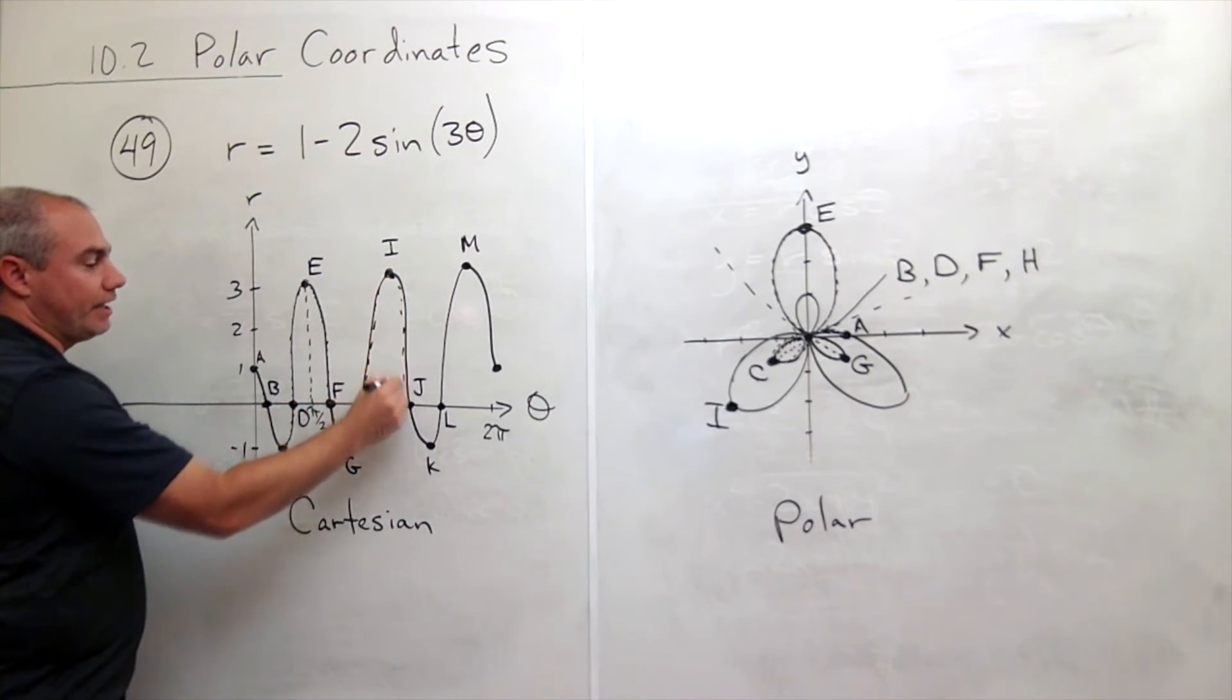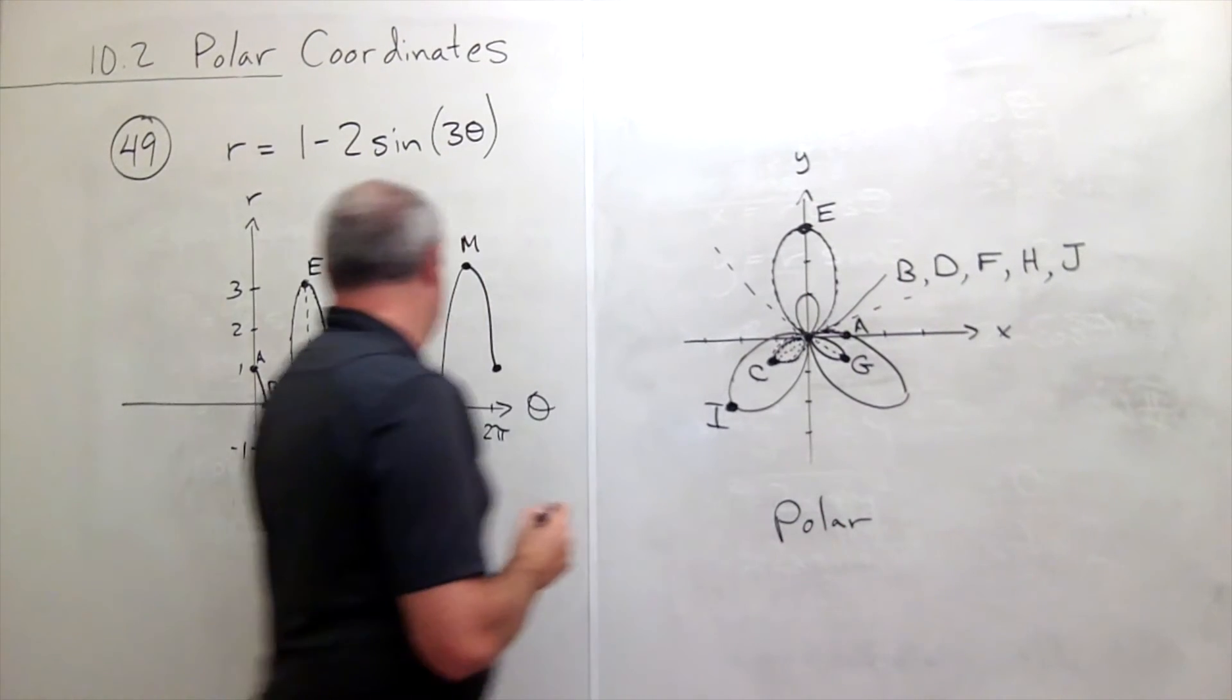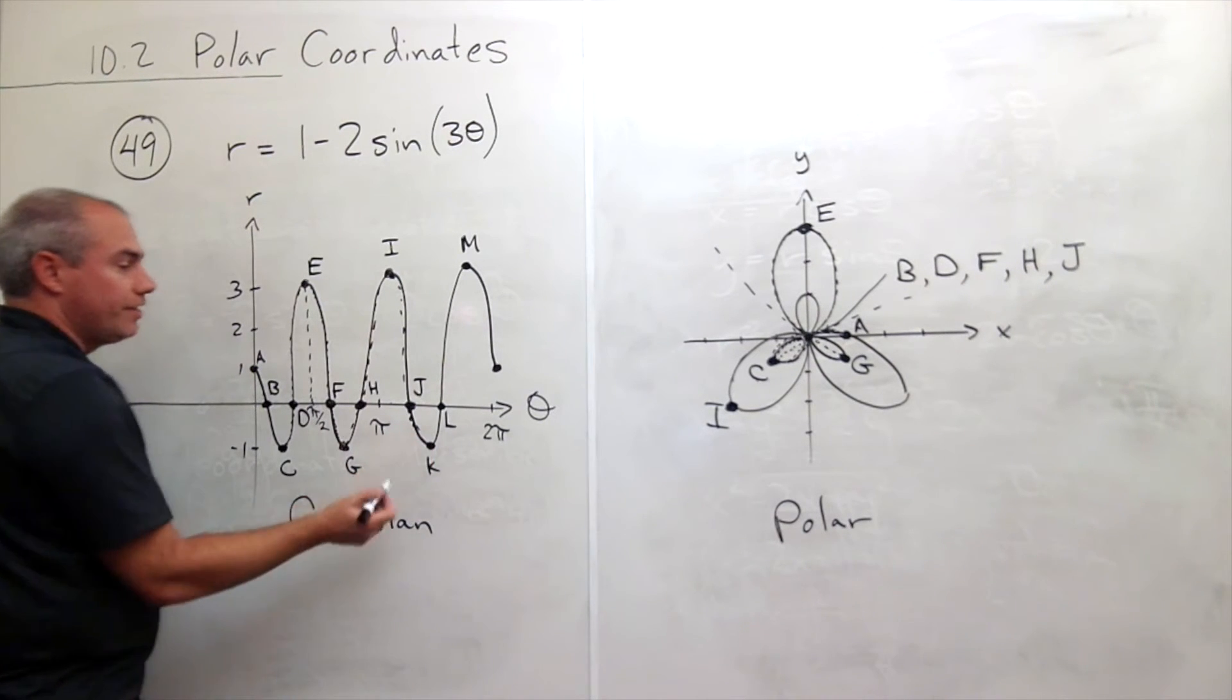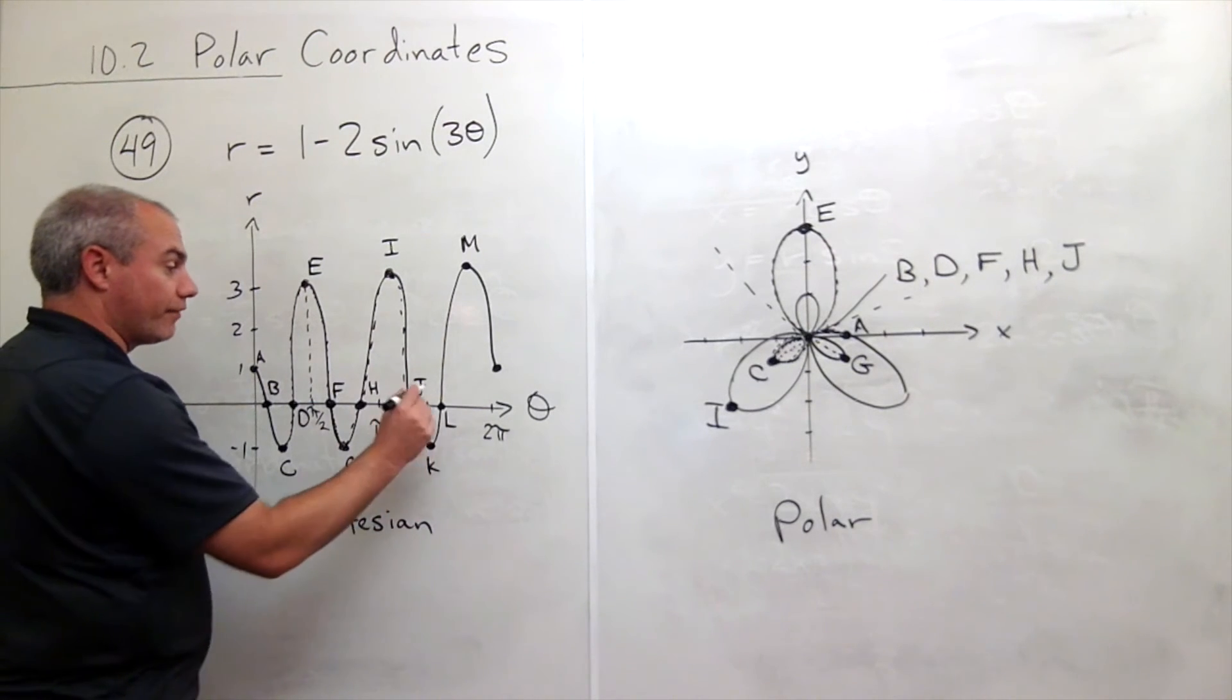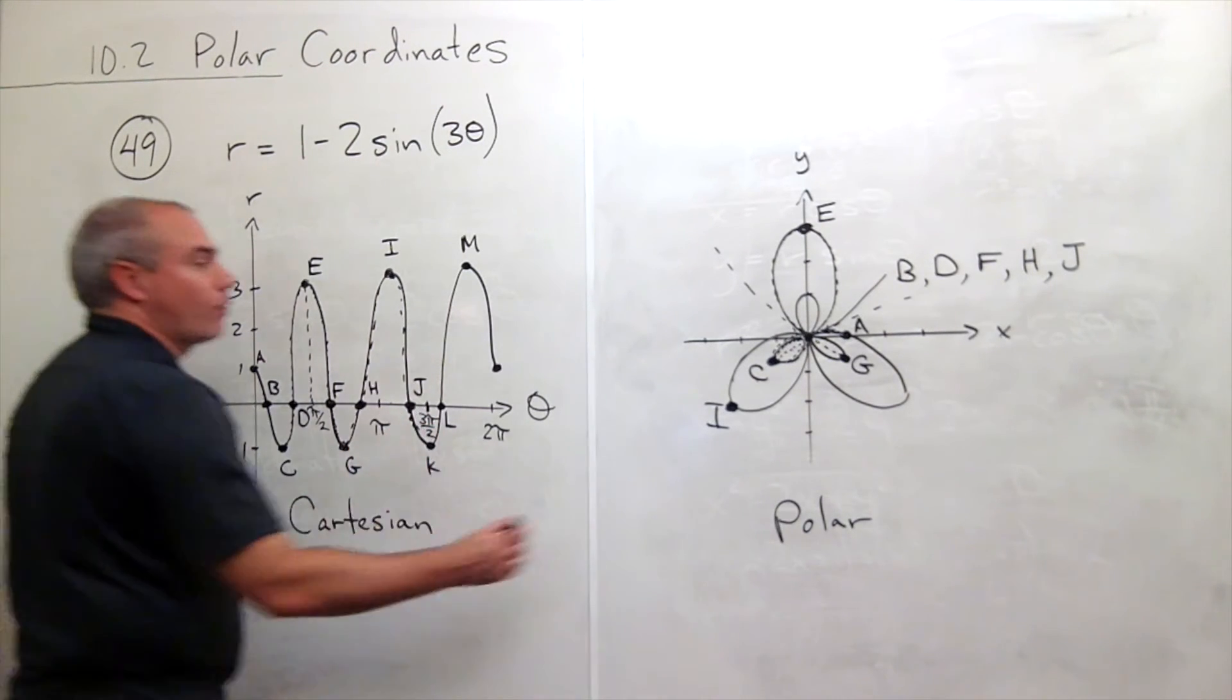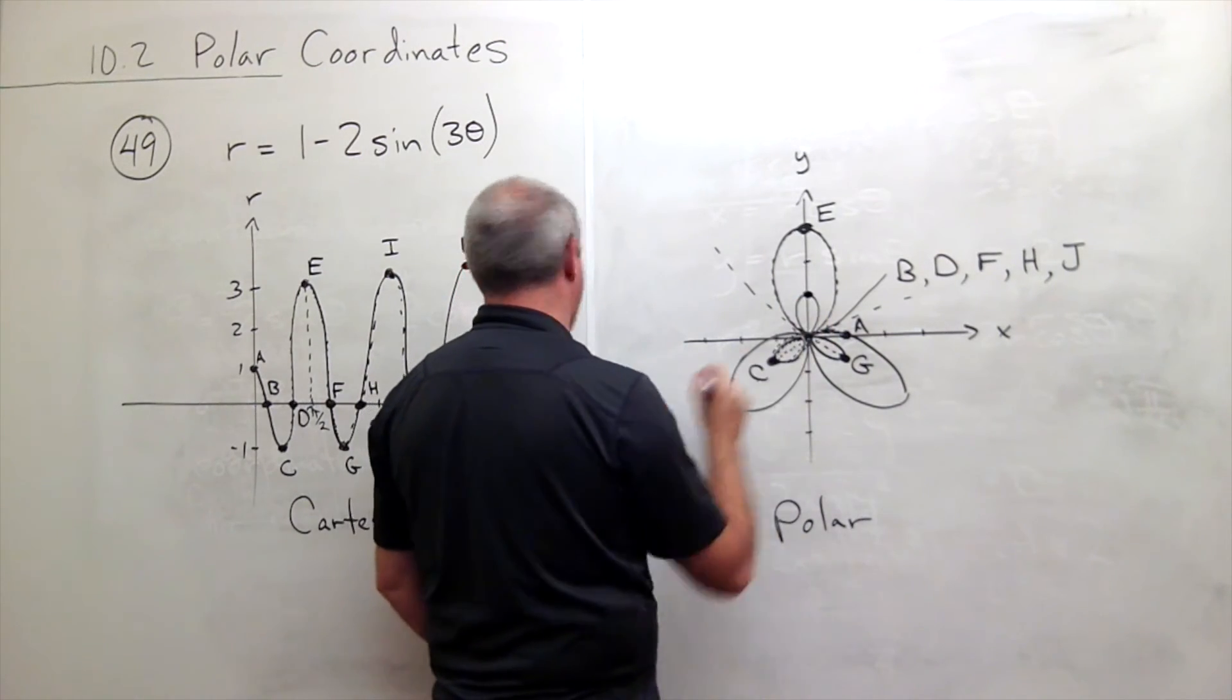Then I head back in, and r is 0 again at j. So the center point, again, is j. Then my angle's getting even bigger, and I walk backward 1. This is about, notice that this point is about 3 pi over 2. 3 pi over 2 is sitting right in here, and it says at 3 pi over 2, walk back 1. So at 3 pi over 2 facing down, I walk back 1, and I get to point k.